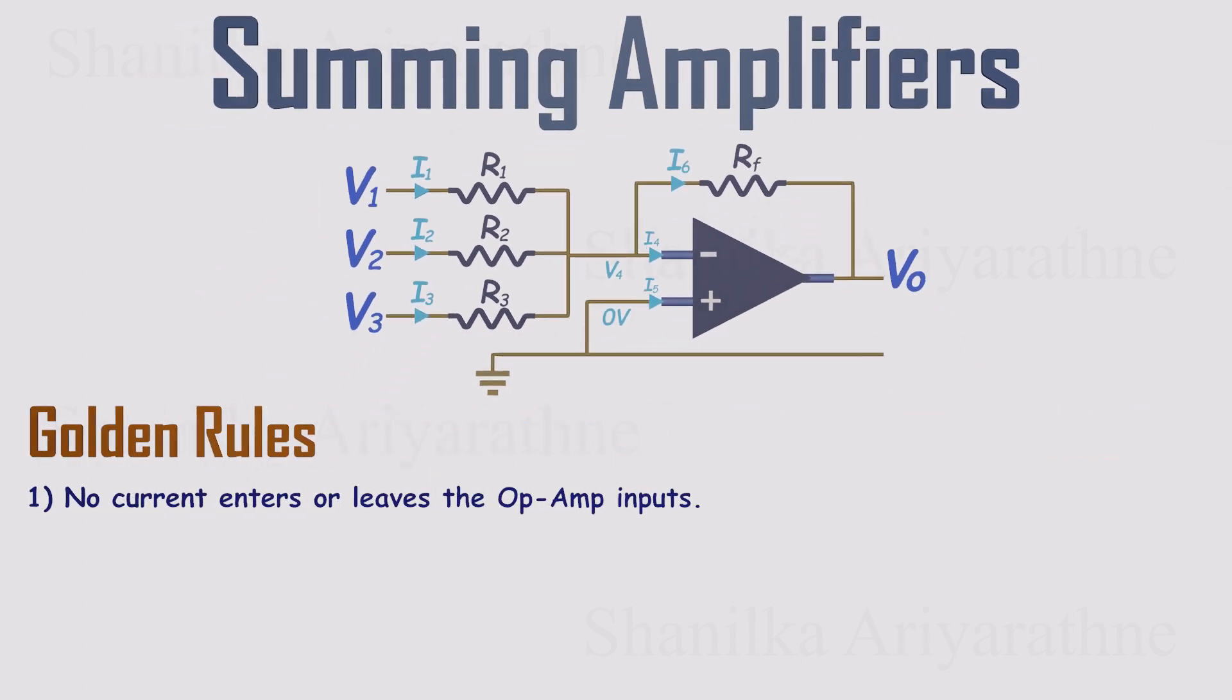Rule 1, no current flows into the op-amp inputs. So I4 equals zero amps, and I5 equals zero amps. That means the currents through R1, R2, and R3 have nowhere else to go. They must flow through the feedback path, RF. In other words, I6 equals I1 plus I2 plus I3. That's our first equation.